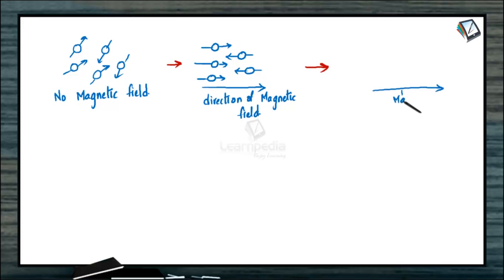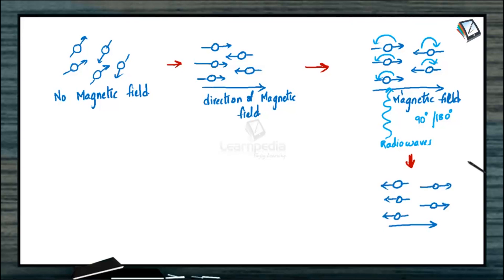This is the magnetic field and these are the protons. These are the radio frequency waves. Now when it is turned on, the protons would absorb some of the energy and they would align in a different direction. This direction may be either 90 degrees or 180 degrees from the equilibrium state. So based on that, after the introduction of the radio waves, all the protons now are aligned in the opposite manner.